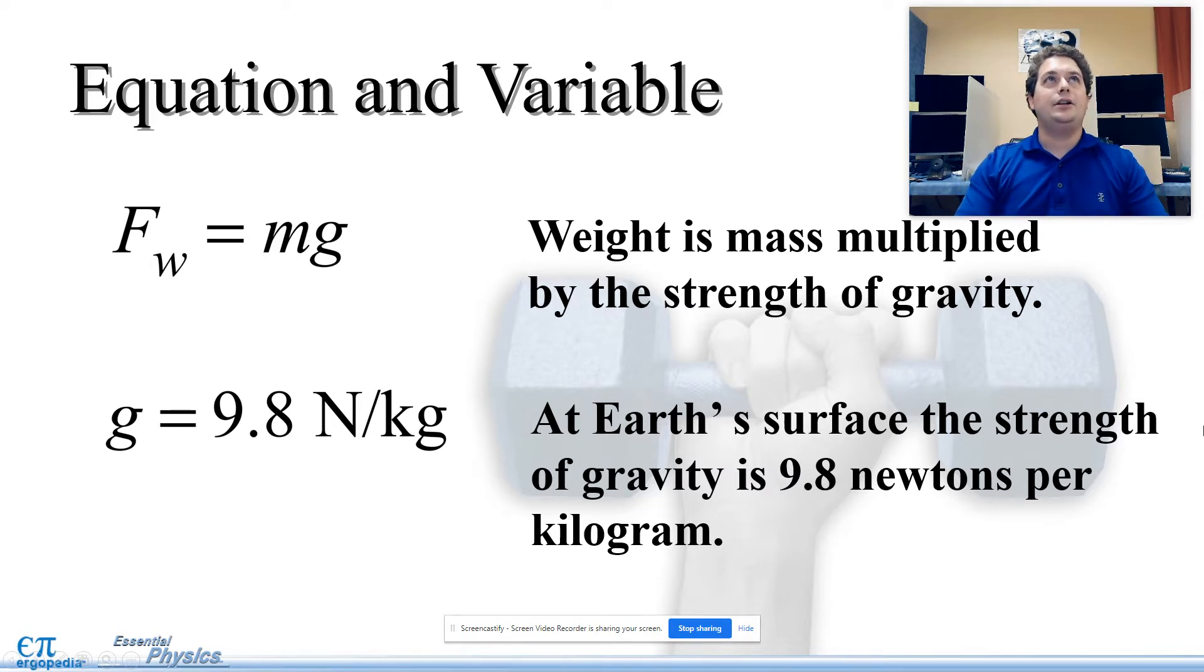We're going to go over a couple of new equations today. Remembering the letter F and the letter M, F being for force, capital F very important, and M being for mass. We haven't talked about either of those yet. You should know that weight is mass multiplied by the strength of gravity. And that at Earth's surface, the strength of gravity is 9.8 newtons per kilogram. That's a different unit. As we go into today, it actually means the same thing as meters per second squared, we're just writing it a little bit differently.